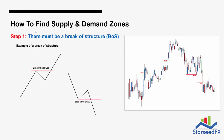Now let's see how closely related order blocks and supply and demand are. How to find a supply and demand zone: step one is the same as the order block — there must be a break of structure, either breaking the high or breaking below the low. In a real market example, there is a break of structure to the upside and a break of structure to the downside. When it comes to break of structure, you have two options: with the body or with the wick. Some people always want it with the body; some can accept the wick. I can accept both, because on a daily chart the wick may show as a body on a lower timeframe like M15. You want to find a clear break of structure before you mark your supply and demand.